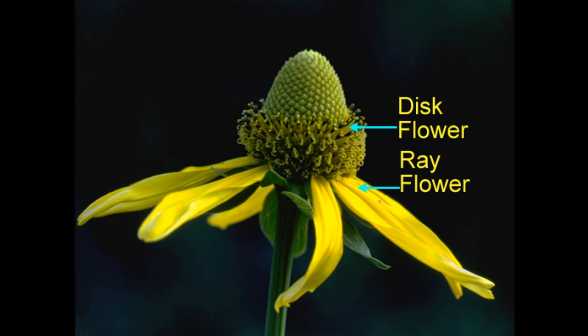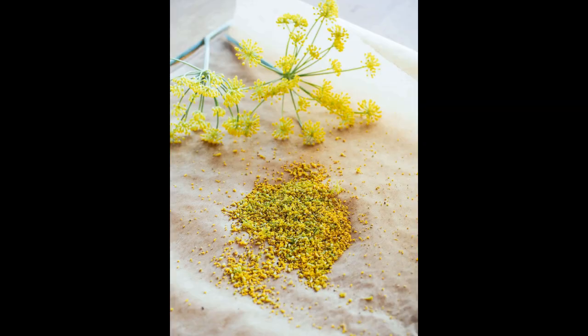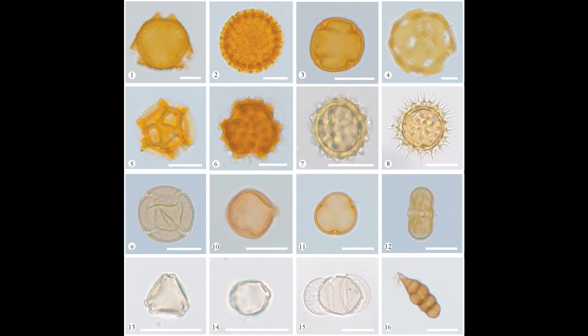Now let us study the sexual parts of the flower. If we take the stamen of a hibiscus or datura flower and tap it gently on white paper, we can observe that some grains fall on the paper. Collect these grains, place them on a slide, put a drop of water on them, and observe under the microscope — they look like ball-like structures. These grains present in the pollen sac are called pollen grains, and they help in the fertilization process.